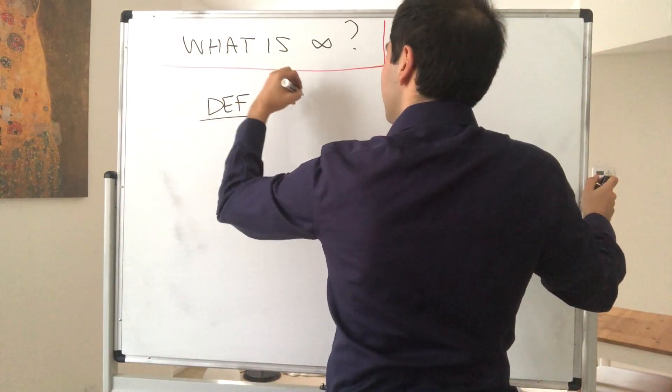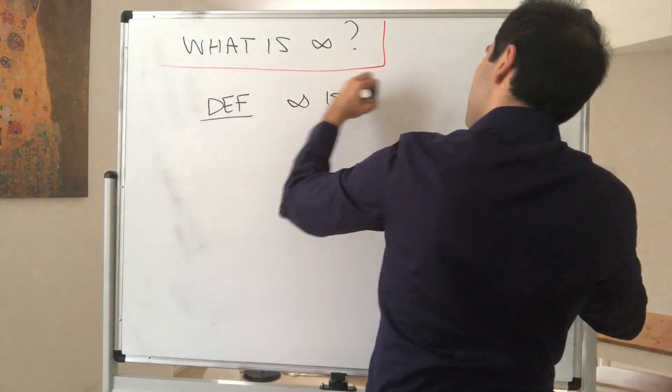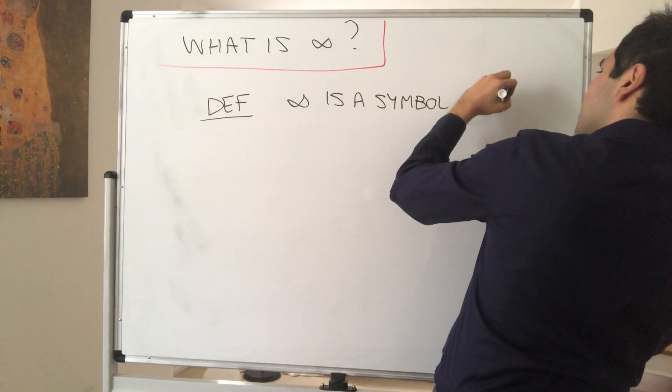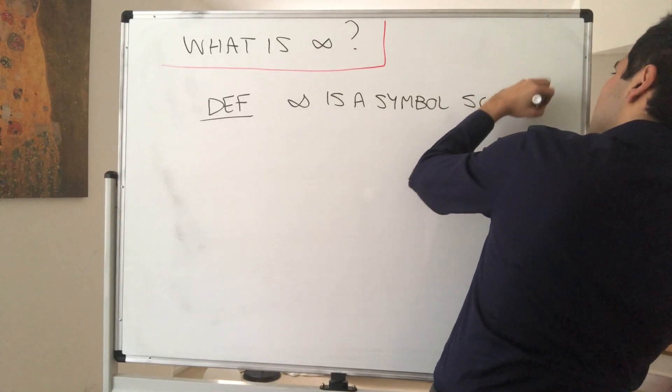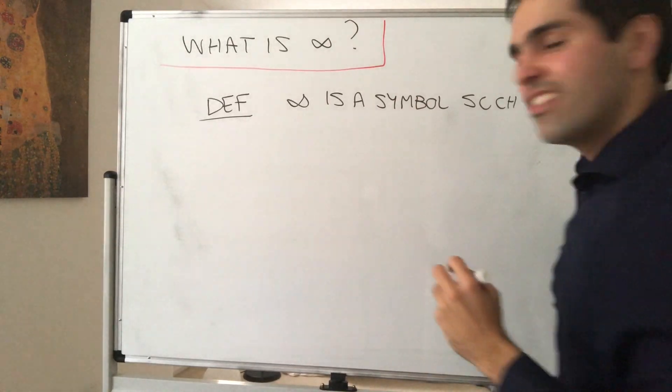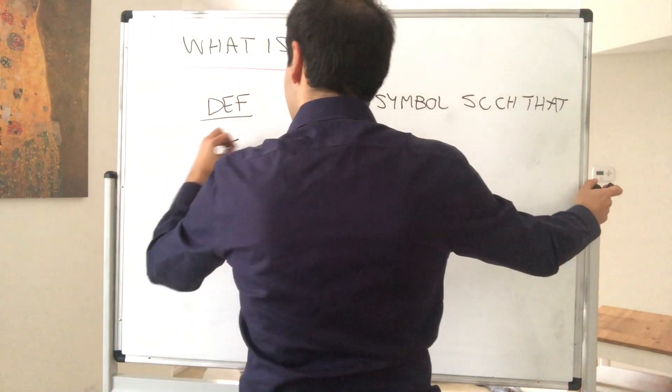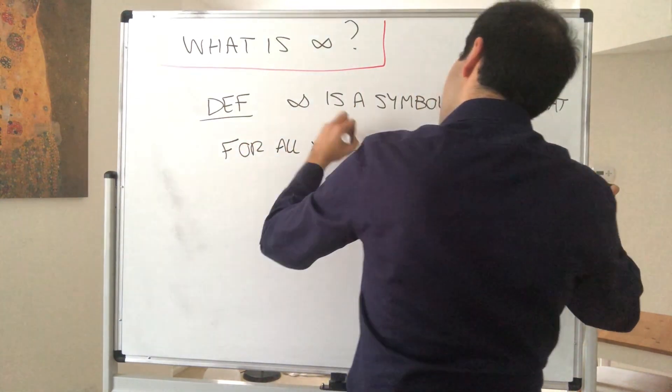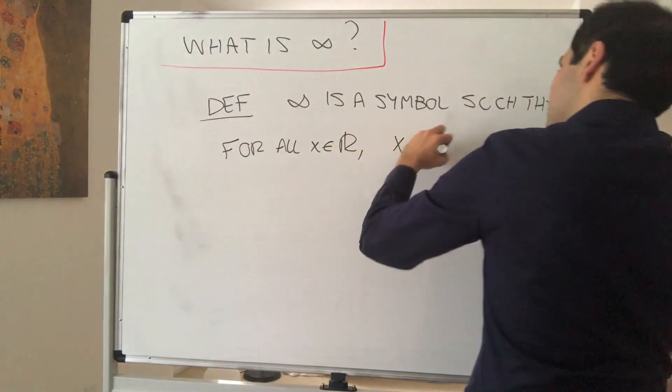So in other words, infinity is a symbol, whatever that means, such that no matter which real number I give you, it's always bigger than that real number. So for all x in R, x is less than infinity.